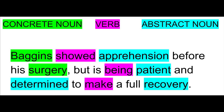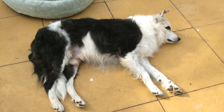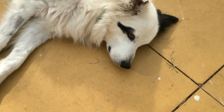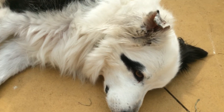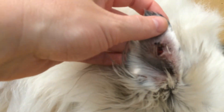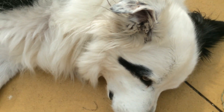If we talk about the abstract ideas about Baggins and his surgery, we could say Baggins showed apprehension before his surgery but is being patient and determined to make a full recovery. This includes many more abstract concepts. Once we've talked in an abstract concept, then we can use the examples in the rest of our paragraph. So to write a good topic sentence, we need to think about the abstract ideas that we want to talk about. If we talk about the things that we can see and touch and feel, then those are our examples and our evidence. Think about the bigger picture when you introduce your topic sentence.